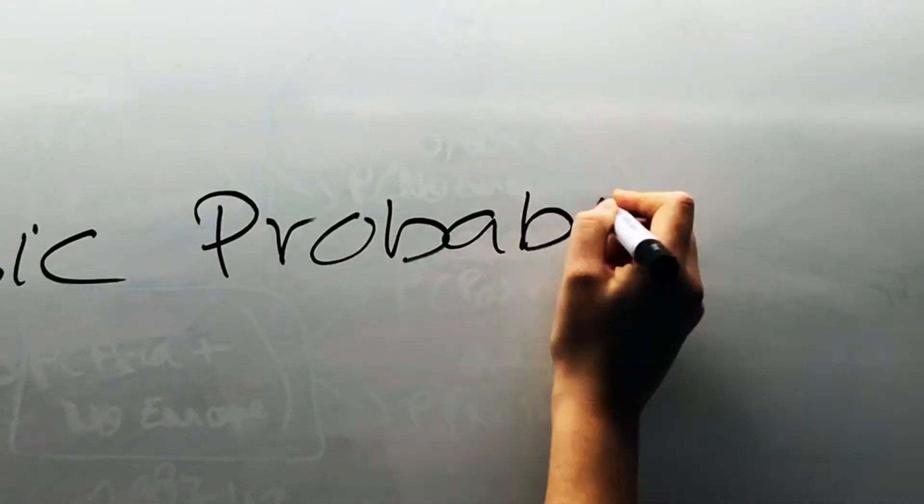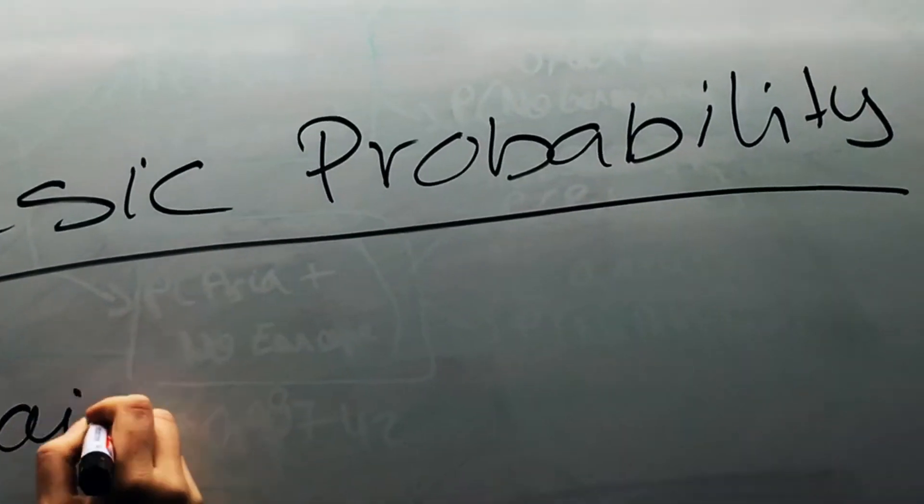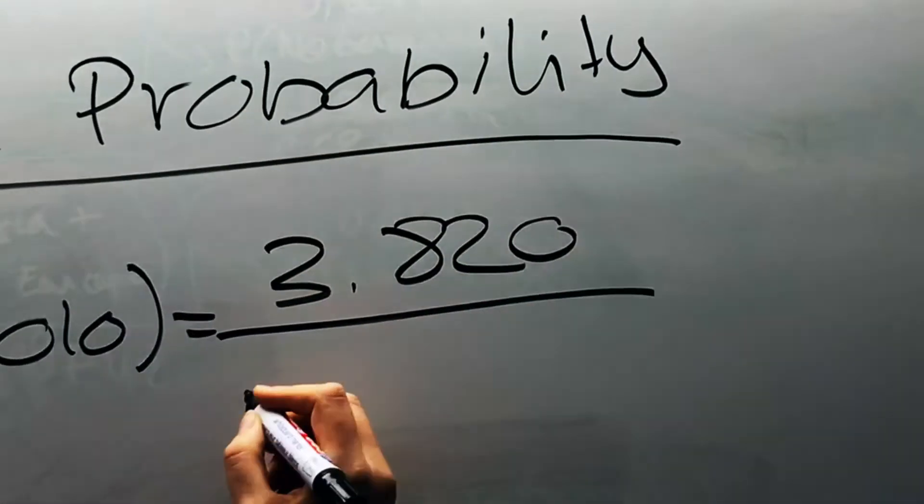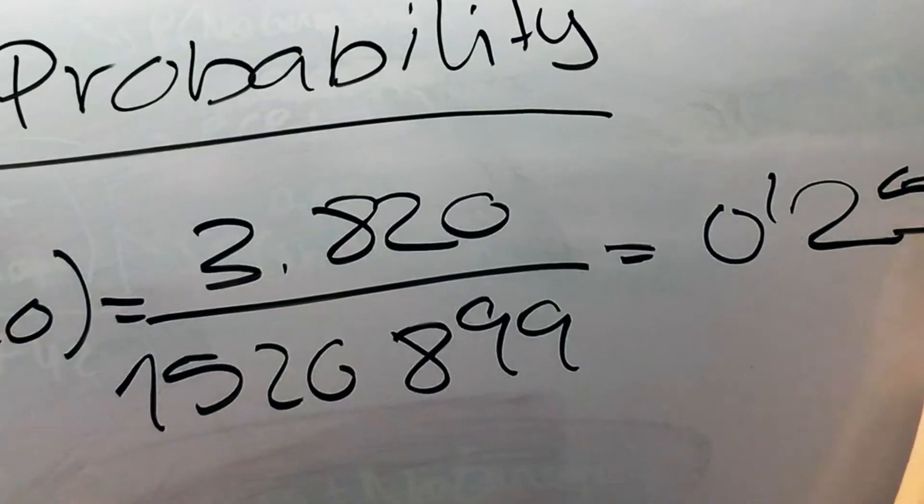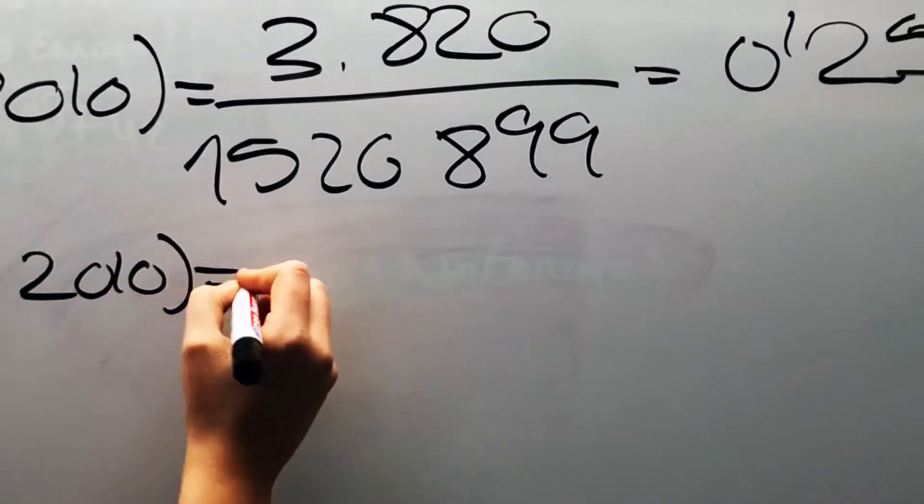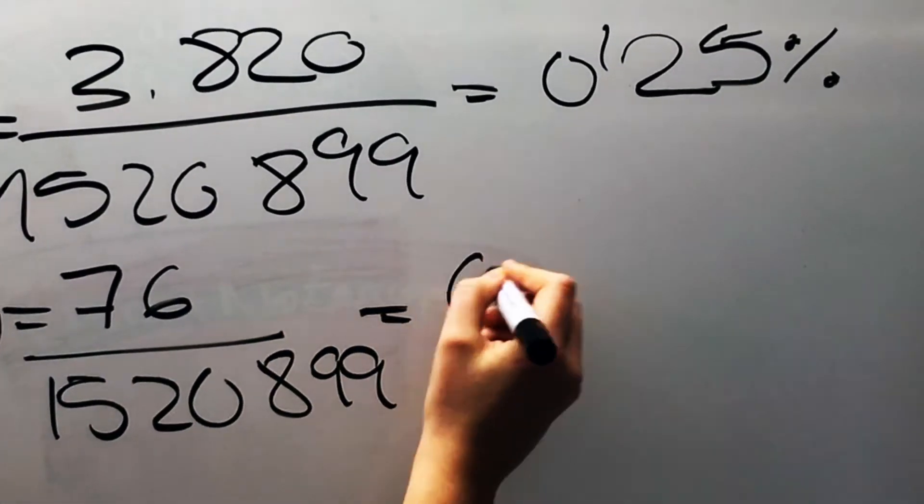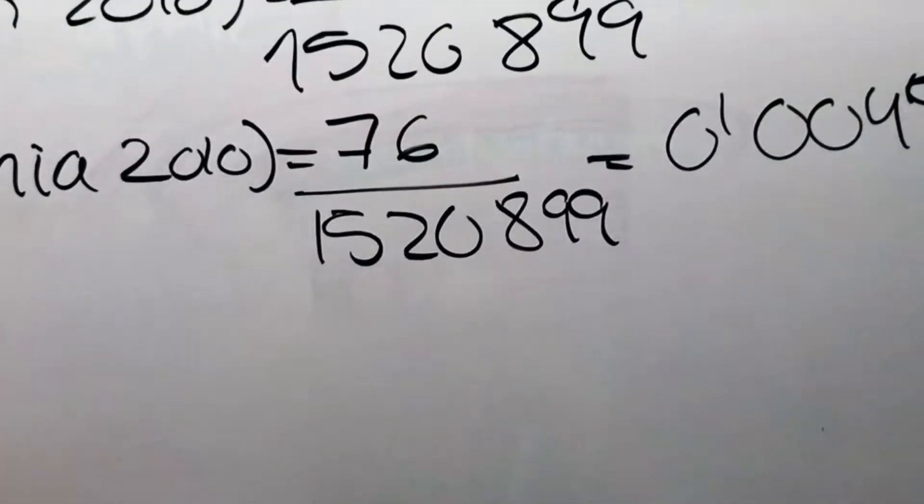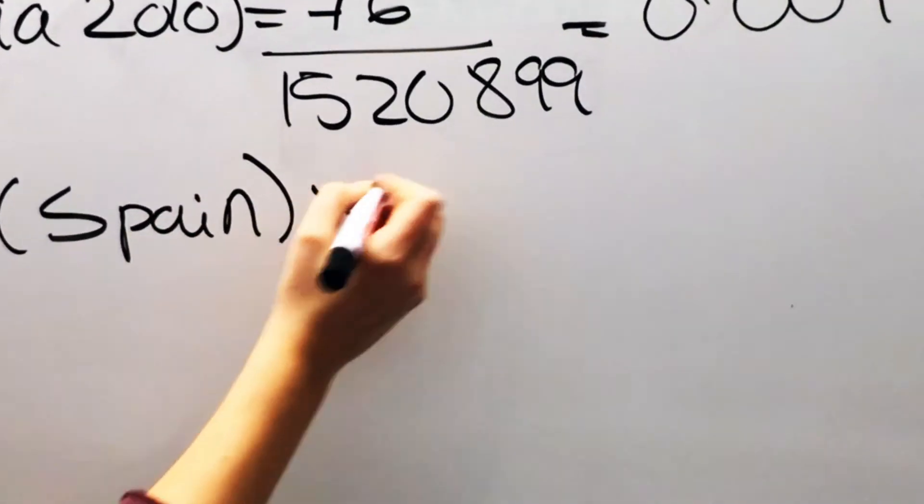We are going to develop the concept of basic probability using year 2010 as the example. Taking the data of all European and Asian countries, we are going to calculate the probability of refugees in Spain and also the probability of Albania. These two successes are independent.